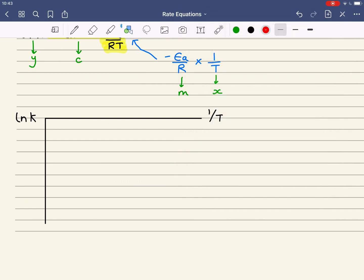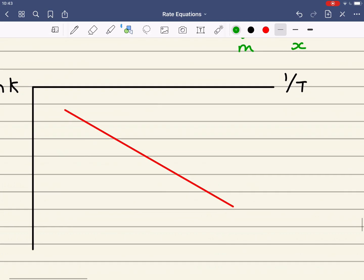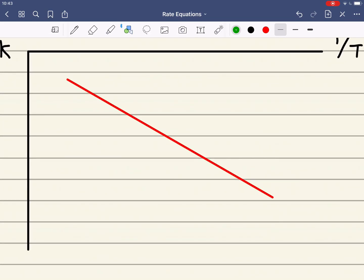So we need to plot the points, and when we do that, we should get a straight line. And once we've got this straight line, we then need to work out the gradient. And when working out the gradient, it's a good idea to use a large triangle. And that would minimize the error.